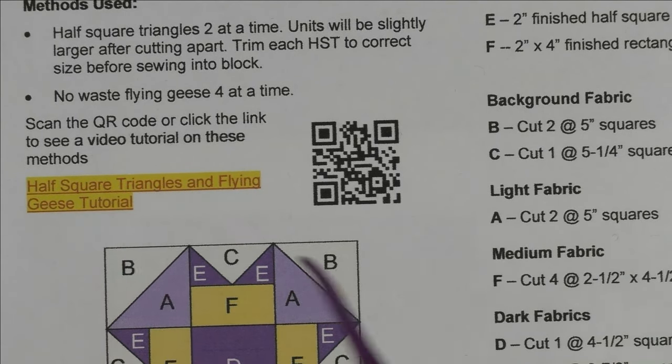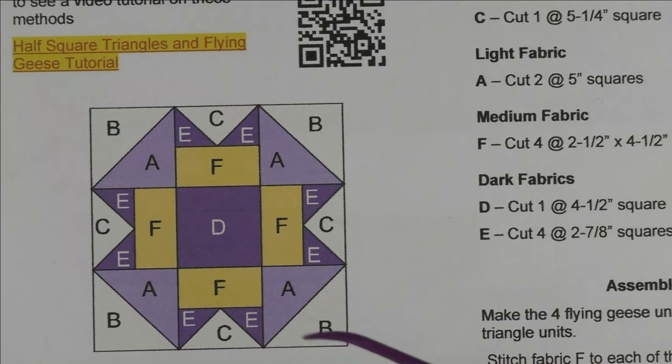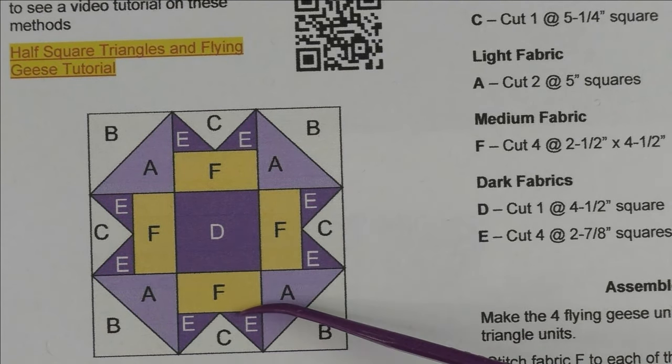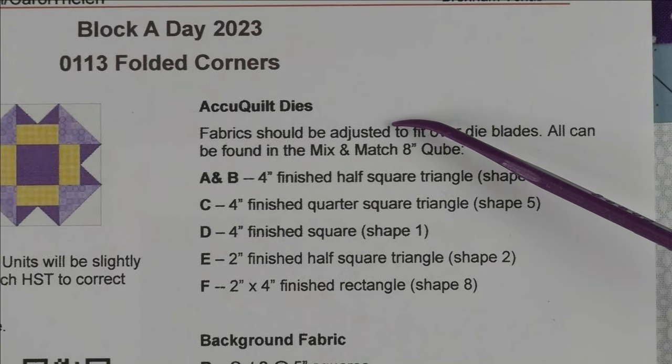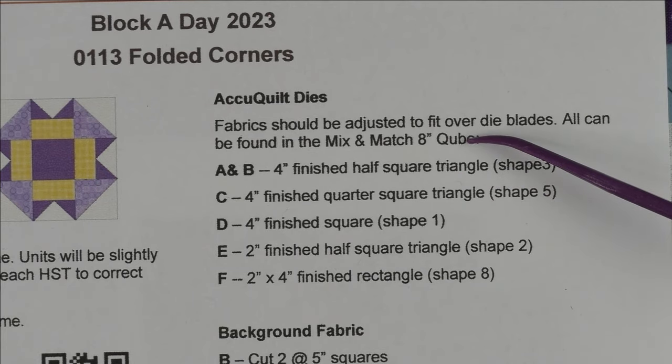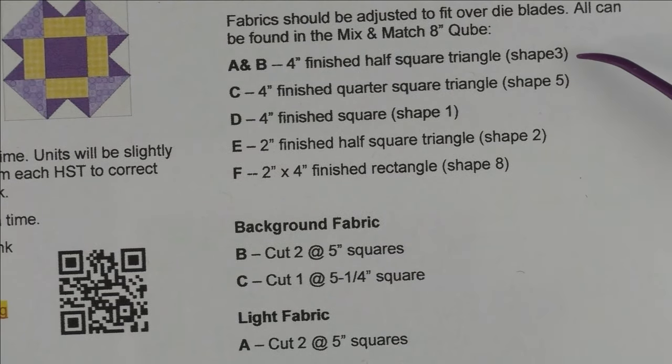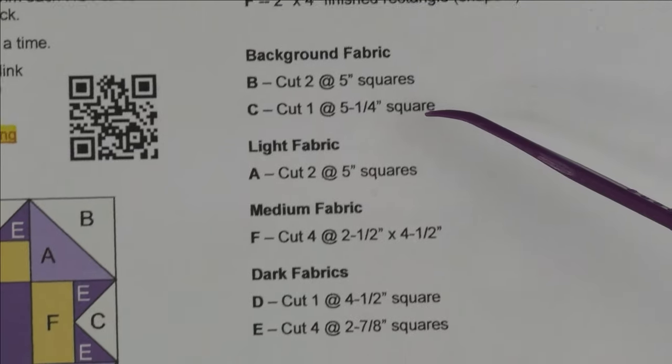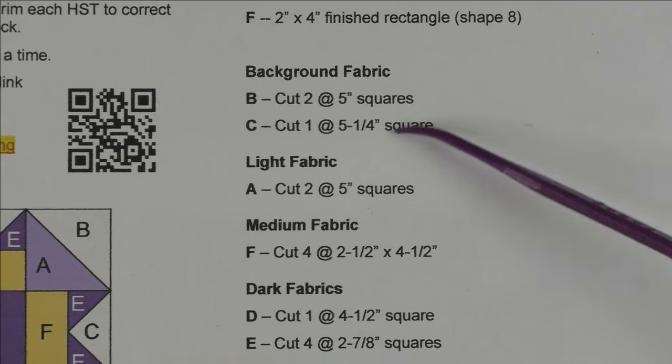Here is the diagram of the quilt and it's marked with the letters. Up here we have the AccuQuilt dies you can use if you have your 8-inch mix and match cube. You're going to use five different shapes from there, and then here are the cutting instructions for rotary cutting and a little bit of assembly information down here.